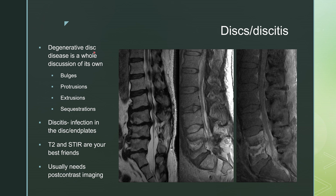D stands for discs and discitis. Degenerative disc disease is a whole other discussion, but you have bulges, protrusions, extrusions, and sequestrations — here are some protrusions and some bulges. What we're talking about here is discitis, which is infection in the disc and end plates. T2 and STIR are your best friends because pus is hyperintense on T2. Here is discitis at L4-5 with pus in the disc space extending into the epidural space. Neurosurgery usually wants post-contrast imaging, so you can see enhancement around the pus within the disc as well as enhancement of those epidural soft tissues.